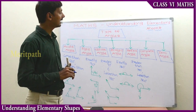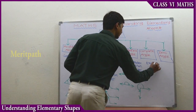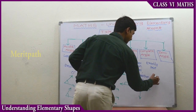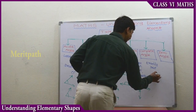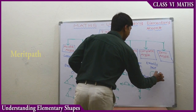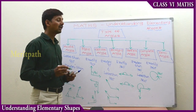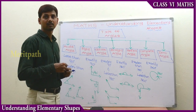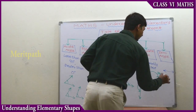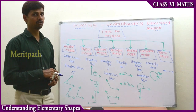Let us go to the complete angle. The angle which measures exactly 360 degrees - we call it a complete angle. We start drawing an angle, complete one full rotation, and we call this angle a complete angle - this is exactly 360 degrees. The zero angle is the angle which measures zero, meaning the angle is not formed at all - those kinds of angles are called zero angles.